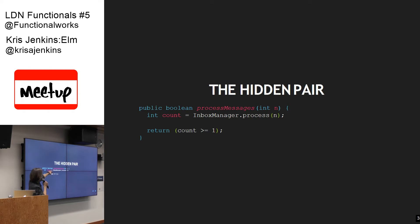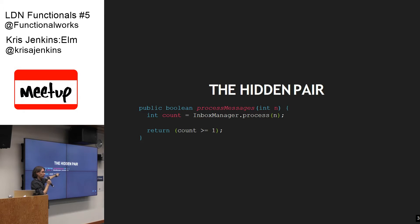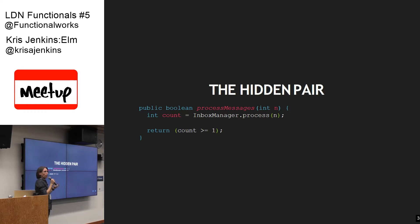This one is called processMessages. We take an integer, we process that number of messages from the inbox manager thing, and return true if we processed any. There's a hidden input here, which is the state of inbox manager when the function is called. You cannot know how this function is going to behave without knowing what state inbox manager is in when it starts. And there's a hidden output — as well as returning this boolean, it's also changed the state of inbox manager. So this function has the traditional pair of inputs and outputs, but also hidden inputs and hidden outputs, without which you cannot know what this function does.